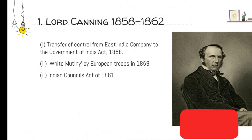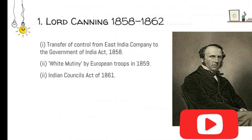Lord Canning served from 1858 to 1862. Transfer of control to the British Crown took place; there was the White Mutiny in which British troops were demanding some rights. The Indian Councils Act of 1861 came, which provided some Indian members in executive roles from representative states, but initially no Indians were included in the Viceroy's executive council.